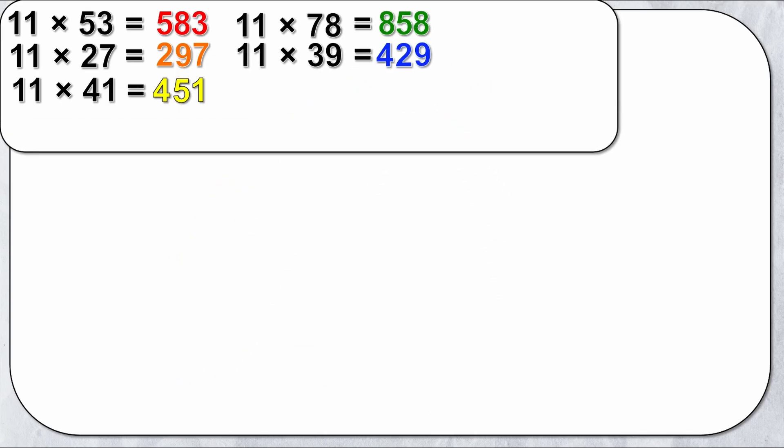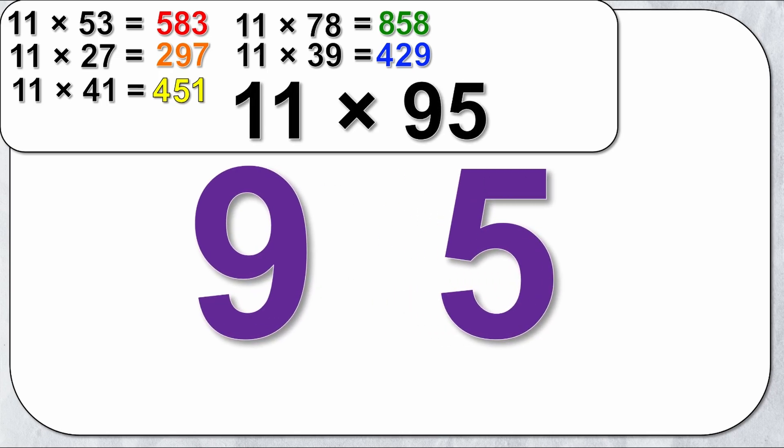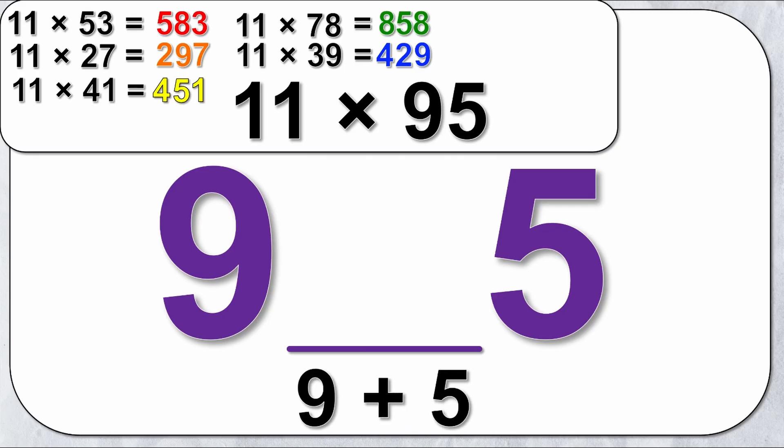Let's try one more before I give you some practice problems to really test it for yourself. 11 times 95. Well I write 95, open it up. The middle number is 9 plus 5 which is 14.